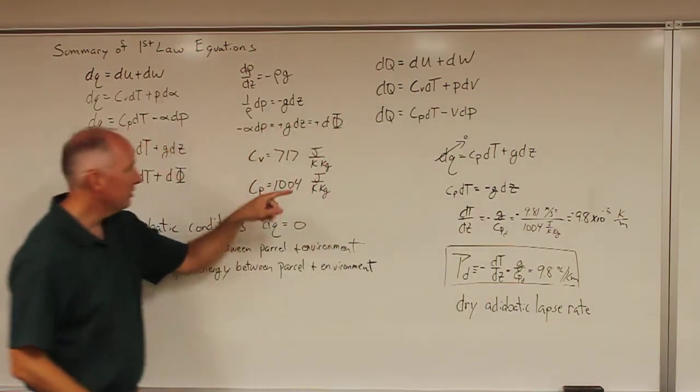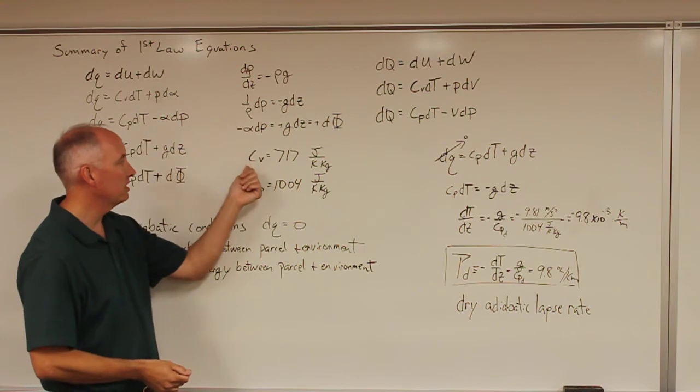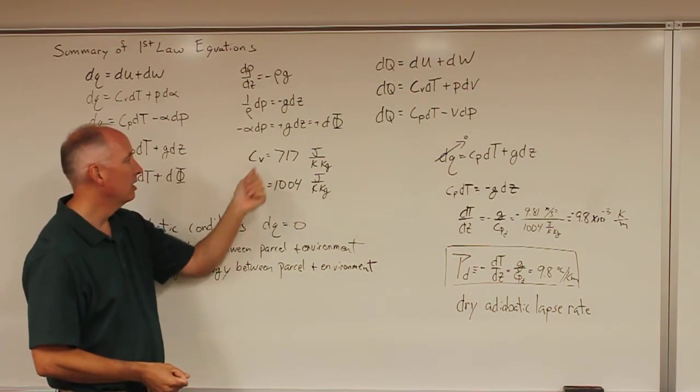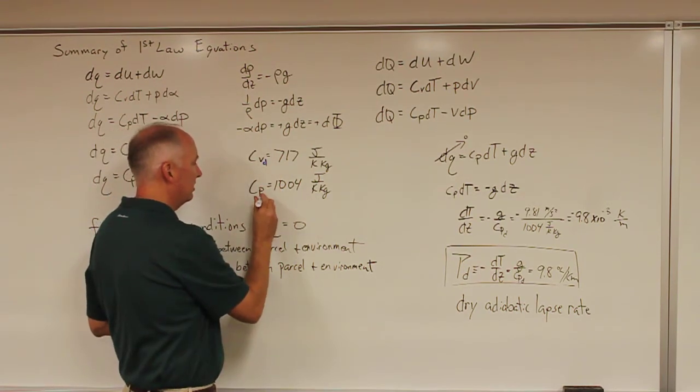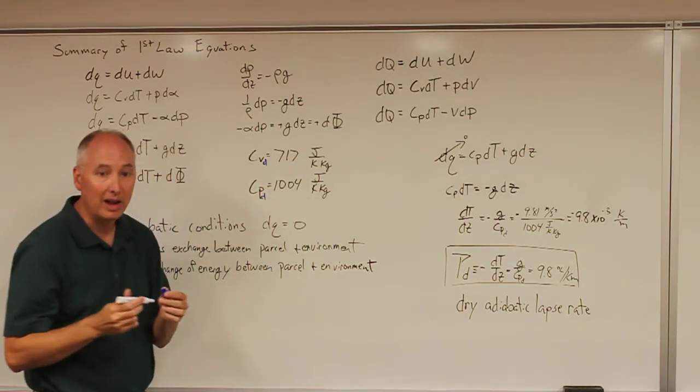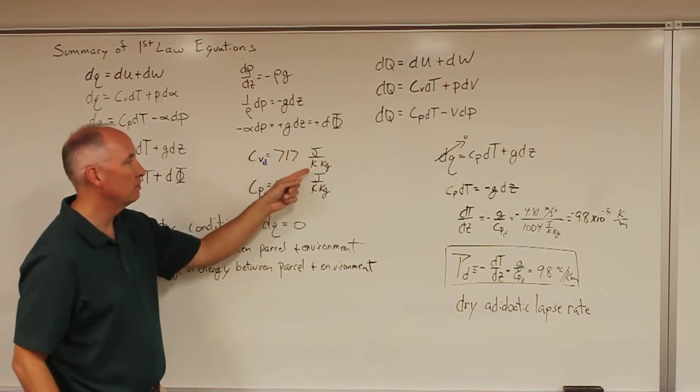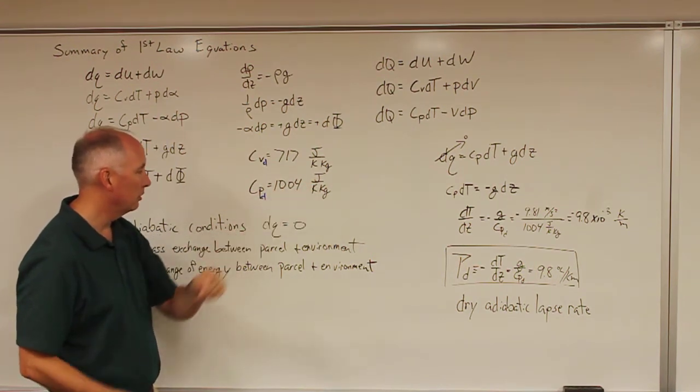We haven't yet mentioned this, but the laboratory values for the specific heat for dry air, ccvd and ccpd for dry air only, are 717 joules per k per kilogram and 1004 joules per k per kilogram.